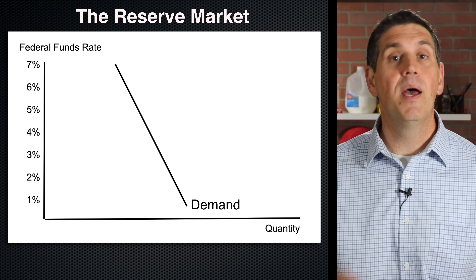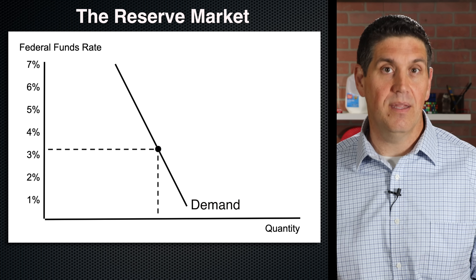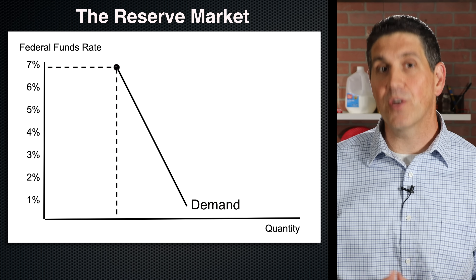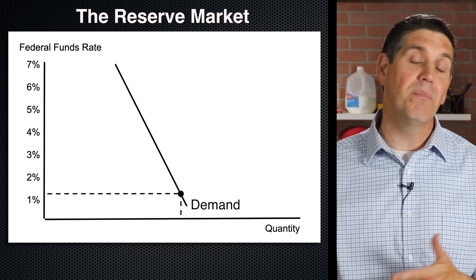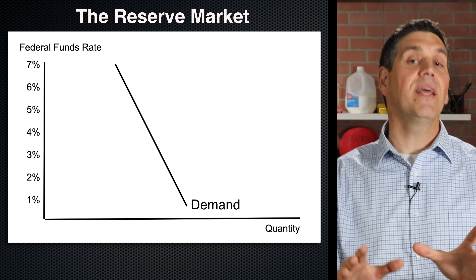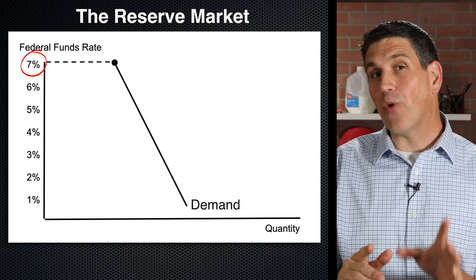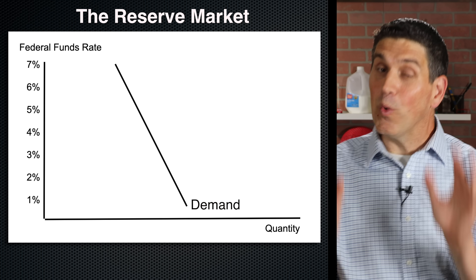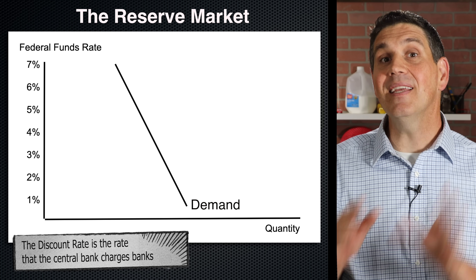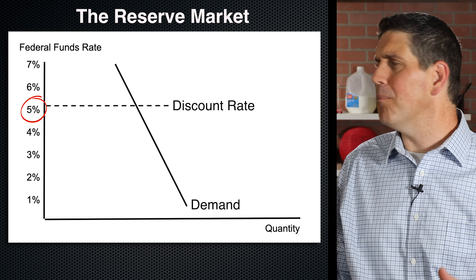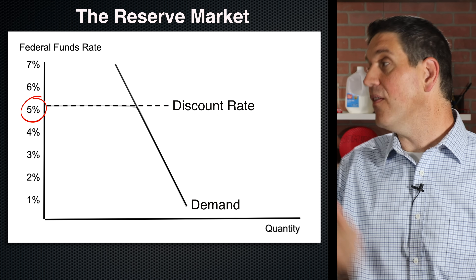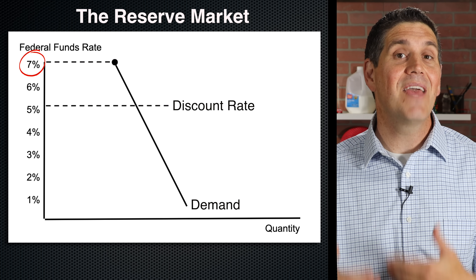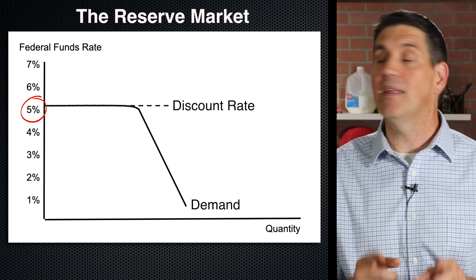Let's start with demand. There's an inverse relationship between the federal funds rate and the quantity of reserves demanded. If the federal funds rate is high, then commercial banks don't want to deposit money with the Fed — they want to loan that money out to other banks and earn a higher rate of return. But if the federal funds rate is low and banks can't earn that much money from lending to each other, they might as well deposit that money with the Fed. So there's a downward-sloping demand curve for reserves. Now, this graph suggests that banks can borrow and lend to each other at a 7% federal funds rate, but there's another option — if a bank really needs money, they can borrow from the central bank, the Fed, at the discount rate. So if the discount rate was, let's say, 5%, then banks wouldn't borrow from each other at 7%. That effectively puts a cap on the federal funds rate at the discount rate. If you're a commercial bank, no one's going to pay you 7% if they can go borrow from the Fed at 5%. So that causes the demand to look like this.